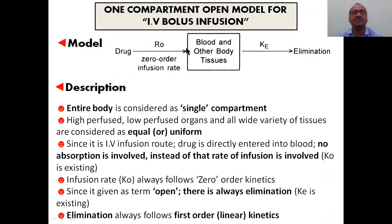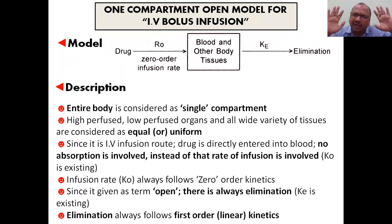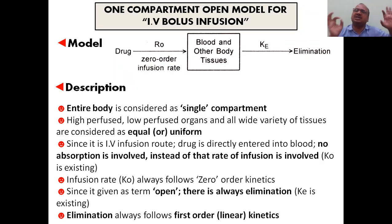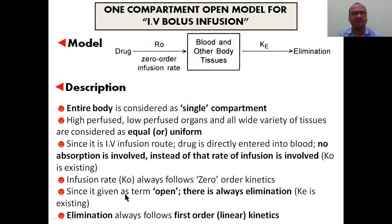Since the drug is directly entered into the blood, there is no absorption involved. Instead, we use rate of infusion, not rate of absorption. Rate of infusion is very important — that's why we use R₀. This is always zero-order because once you adjust two drops per minute, that same rate is maintained throughout. Whether you increase the concentration of drug in the bottle or not, if you've set two drops per second, it stays constant — that's zero-order. The rate of entry of drug into the body is called rate of infusion, indicated by R₀.